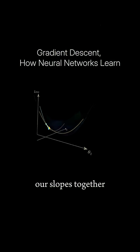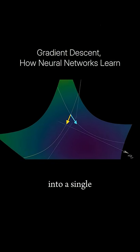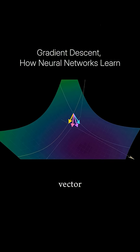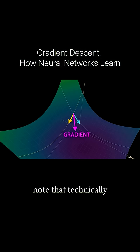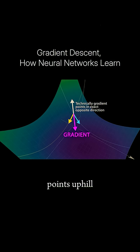From here, we can put our slopes together into a single vector called the gradient, which acts like a little compass that points us downhill. Note that technically the gradient points uphill, and we move in the opposite direction to go downhill.